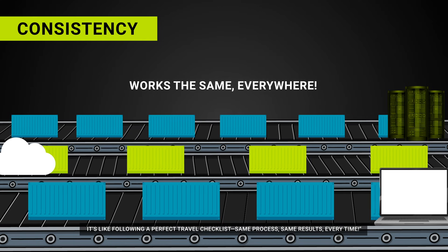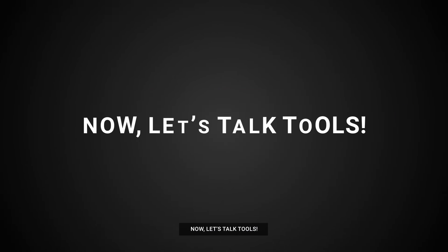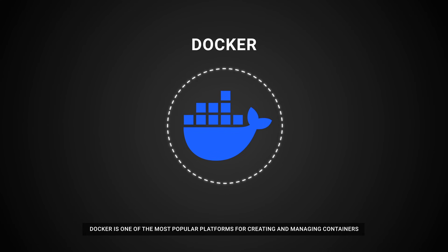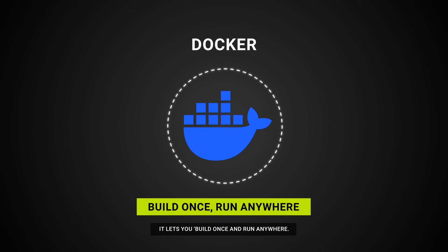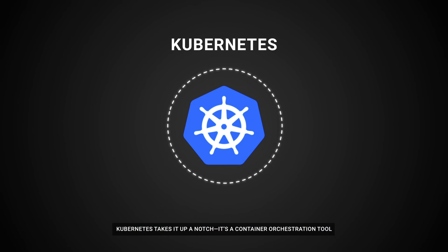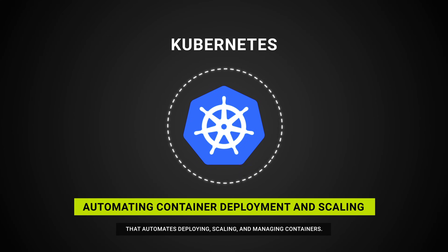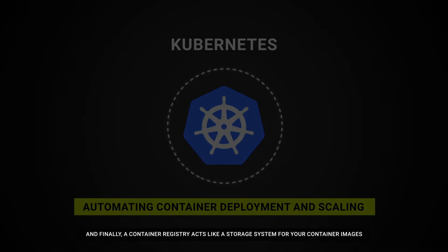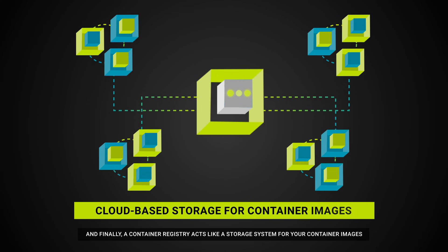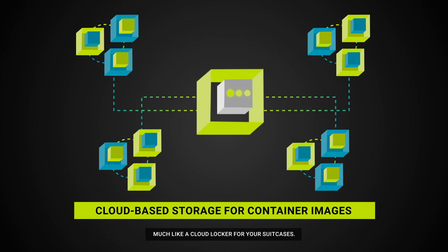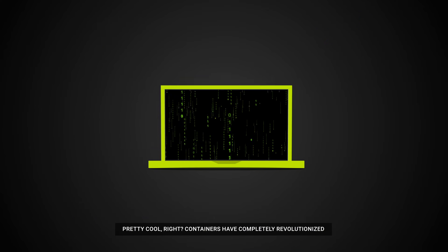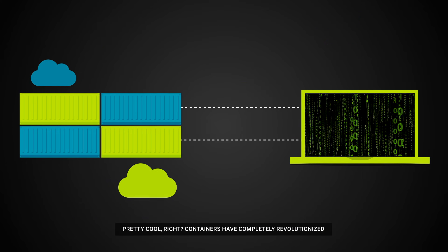Now let's talk tools. Docker is one of the most popular platforms for creating and managing containers — it lets you build once and run anywhere. Kubernetes takes it up a notch; it's a container orchestration tool that automates deploying, scaling, and managing containers. And finally, a container registry acts like a storage system for your container images, much like a cloud locker for your suitcases.